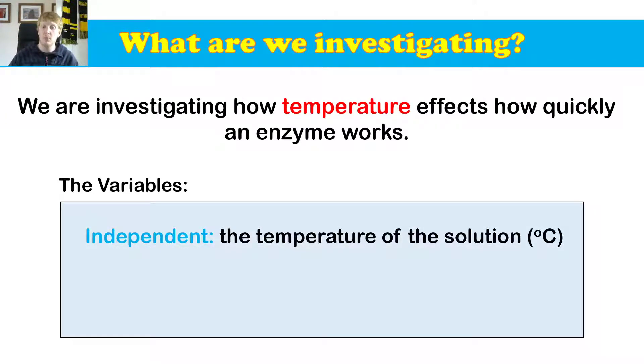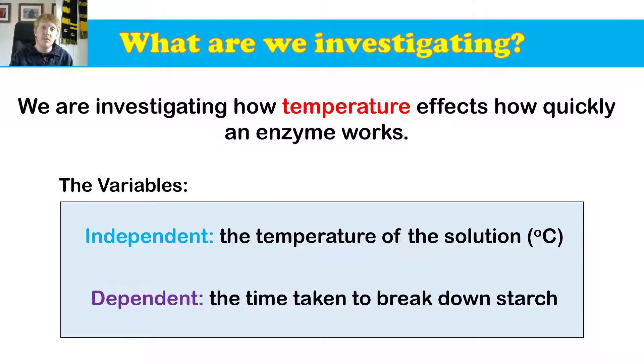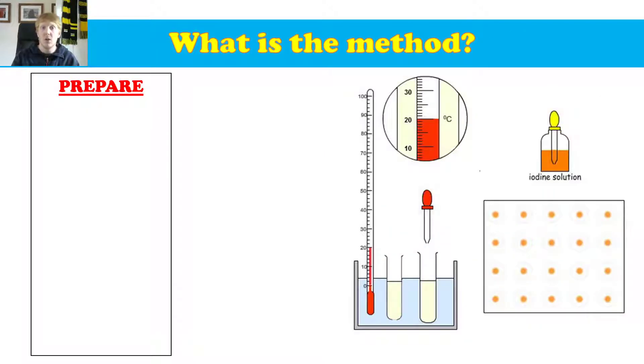So the independent variable that we're looking at is the temperature of the solution in degrees Celsius. The independent variable is the one that we change, remember. So we're going to change the temperature between experiments. And the dependent variable, or the one we measure, is going to be the time it actually takes to break down the starch in seconds.